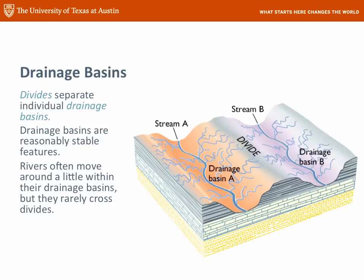Drainage basins are separated by an area called a divide, and that's a line on a map. On one side, a raindrop that falls there would fall into drainage basin A, and on the other side, into drainage basin B. You've probably heard of the continental divide. The continental divide in the U.S. is the line on one side of which a raindrop would end up in the Pacific Ocean, and on the other side in either the Gulf of Mexico or the Atlantic.